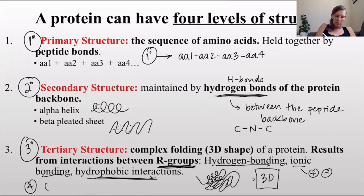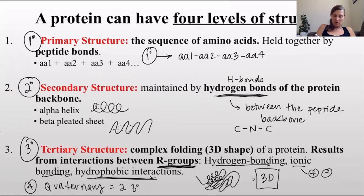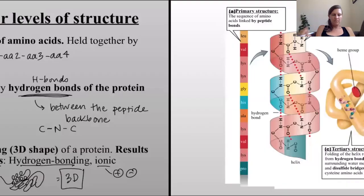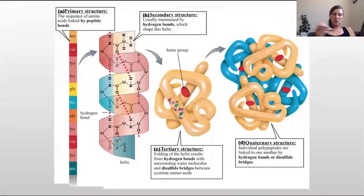The fourth level is called the quaternary structure, which means you have two tertiary structures - two three-dimensional proteins - coming together to form one large protein.